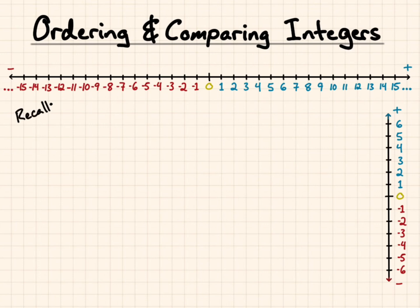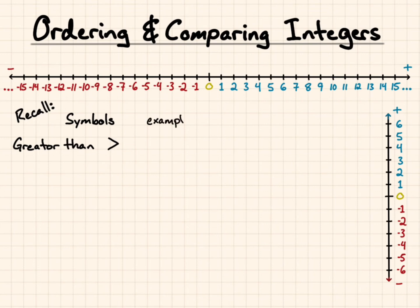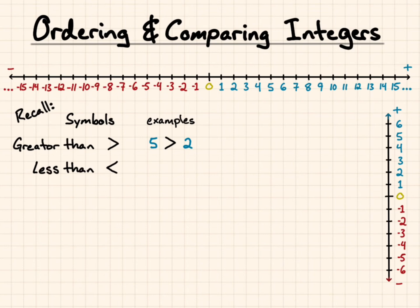First we want to recall comparing symbols. We have greater than — it looks like this. As an example, we could say that 5 is greater than 2. The value of 5 is greater than the value of 2. A less than symbol looks like the same symbol only pointing in the opposite direction. We can say that 0 is less than 4, or the value of 0 is less than the value of 4.